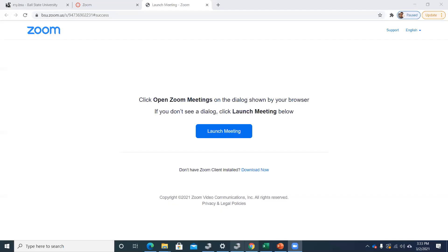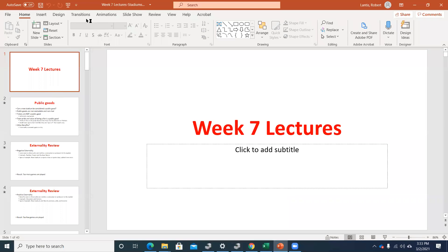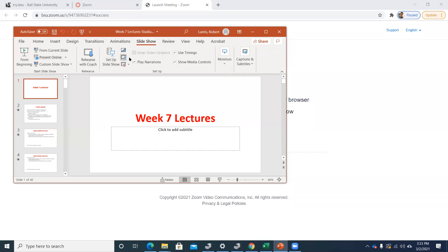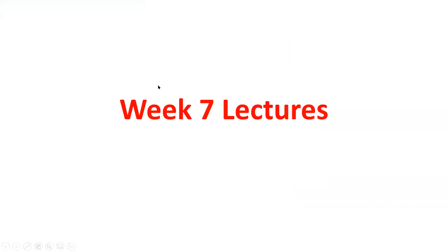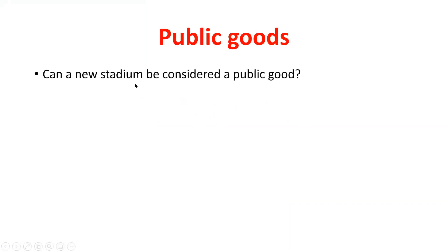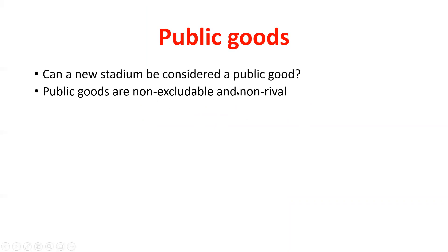The new stuff we have today — we'll be reviewing some concepts that maybe you remember from 201, but putting a little spin on them. The first thing we'll start talking about is the idea of public goods. Can we consider a stadium a public good? Once it's built, anybody can use it — it's non-excludable. As long as you want to purchase tickets, the benefits that stadium has to the nearby area are non-excludable.